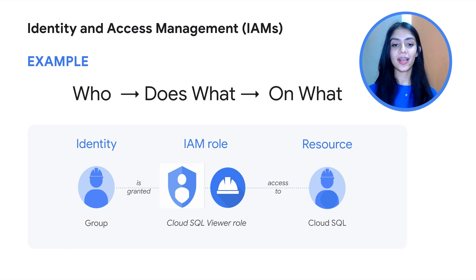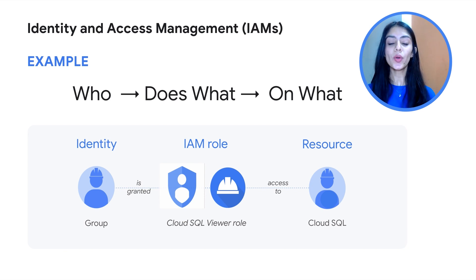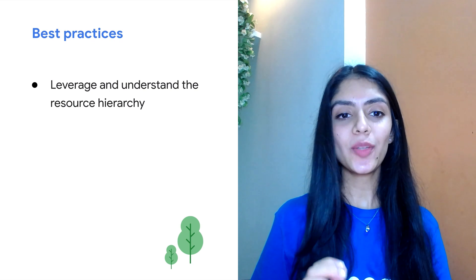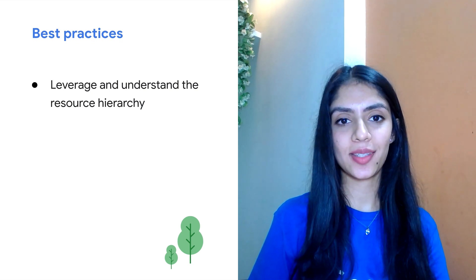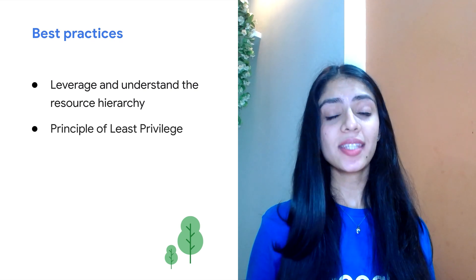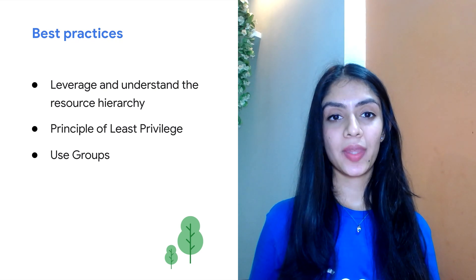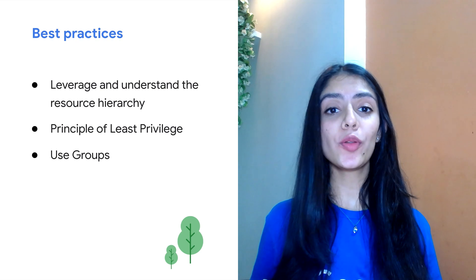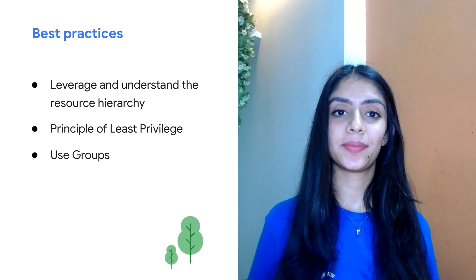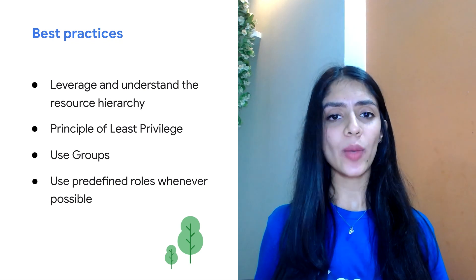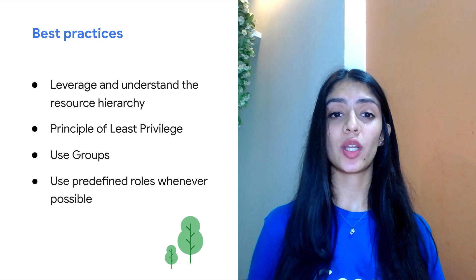Here's an example: a group of users who are granted the Cloud SQL viewer role, which grants them access to Cloud SQL. Here are some best practices regarding IAM: leverage and understand the resource hierarchy; use projects to group resources that share the same trust boundary; check the policy granted on each resource and make sure you understand the inheritance; use the principle of least privilege, meaning don't over-provision permissions; grant roles to Google groups rather than individuals so that when new members are added they just need to be added to the group; and use predefined roles whenever possible, as opposed to basic roles which give too much access, or custom roles which can be hard to maintain.